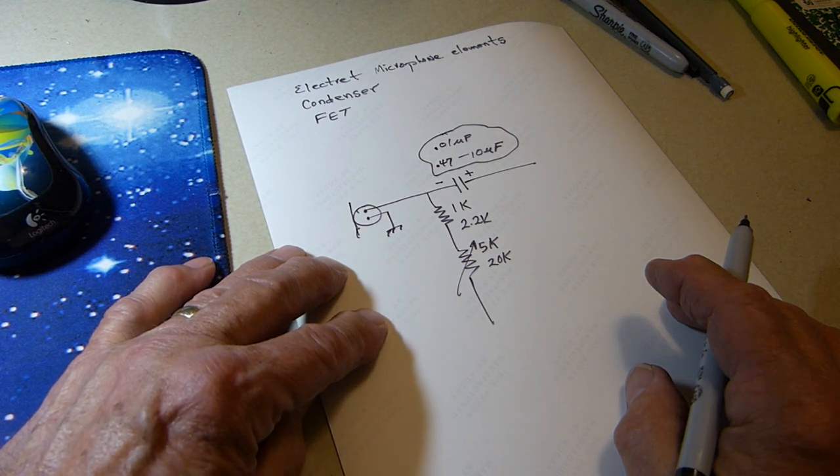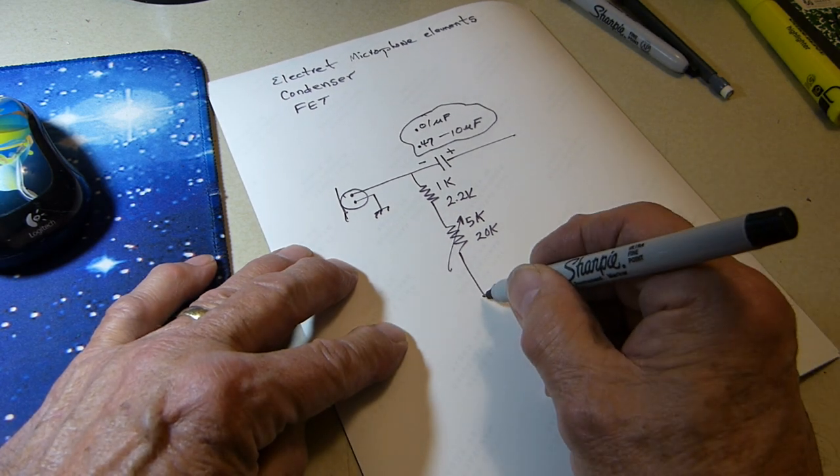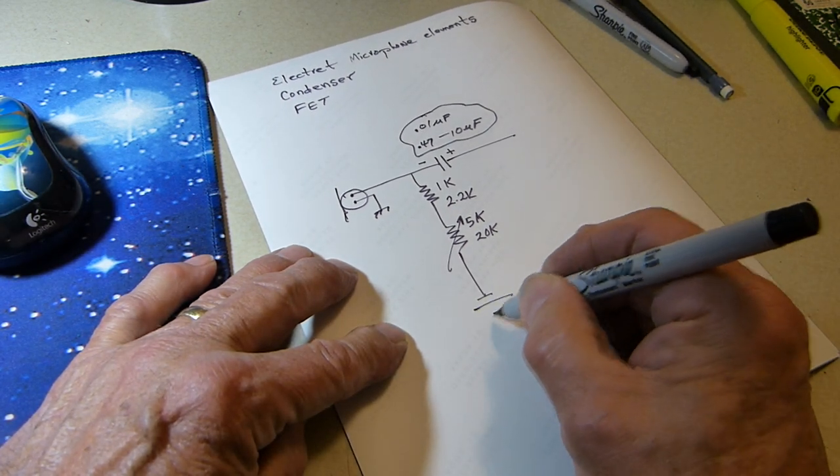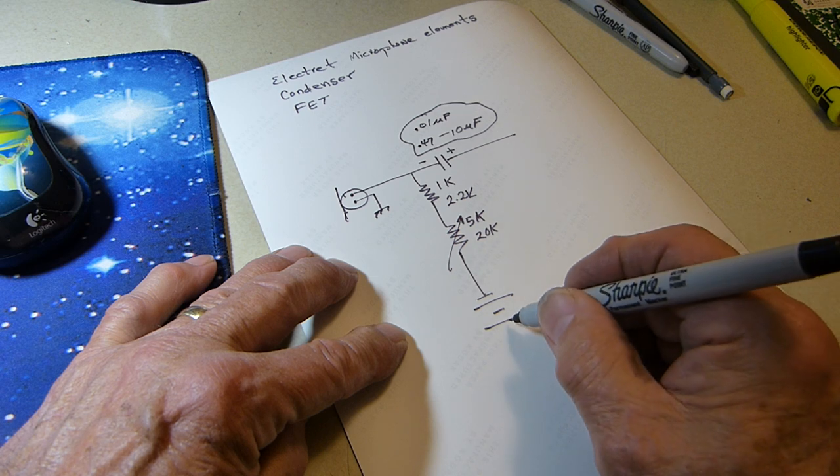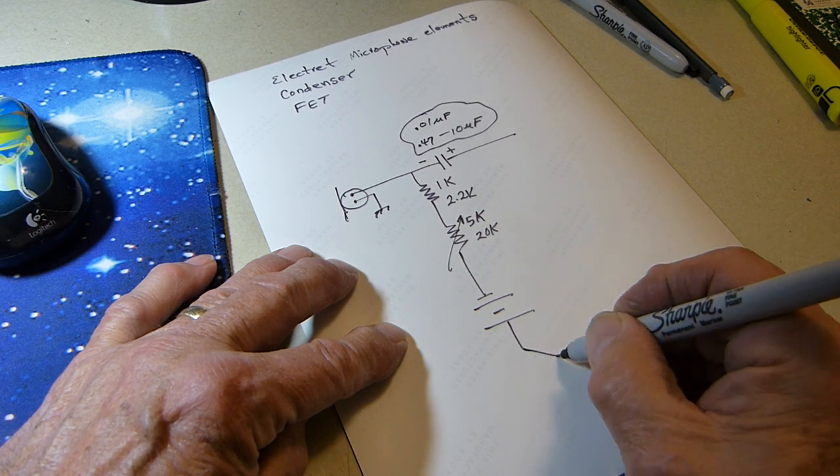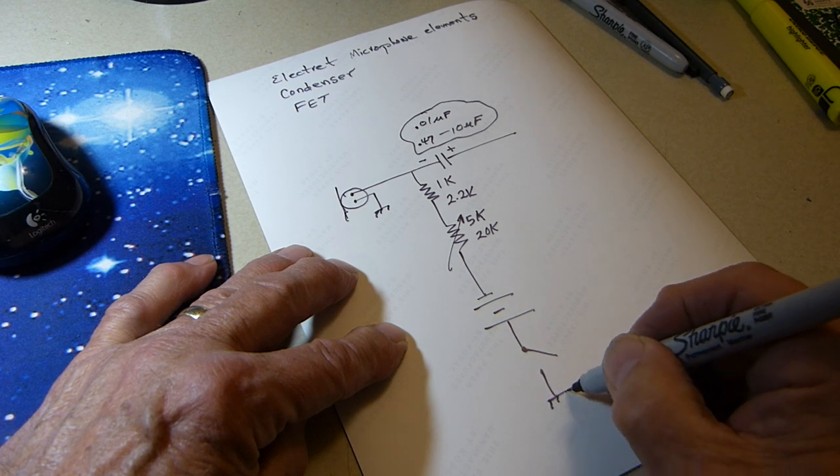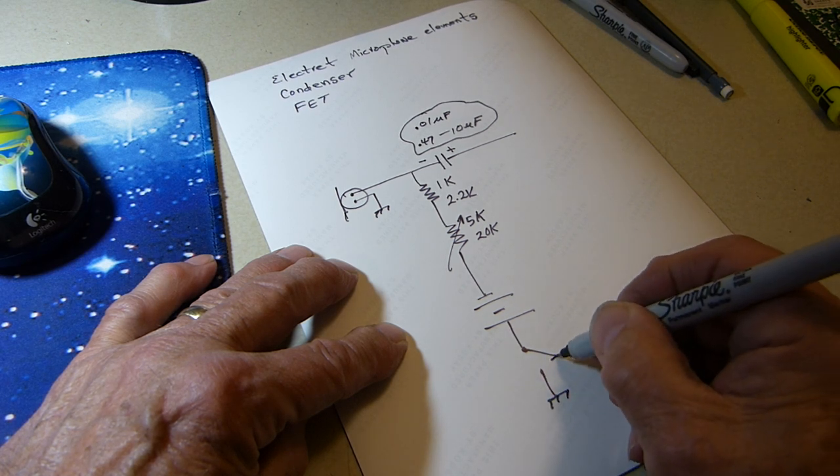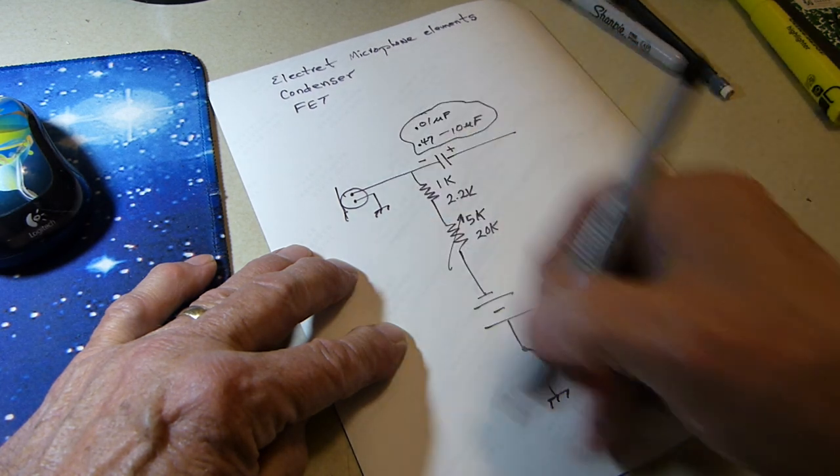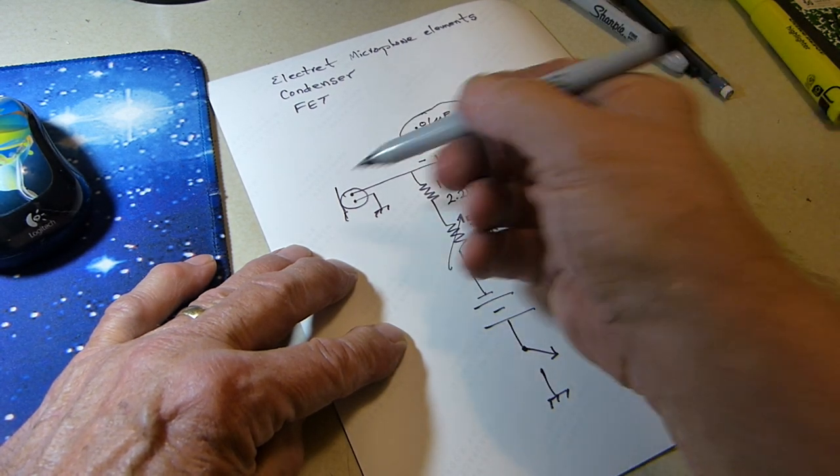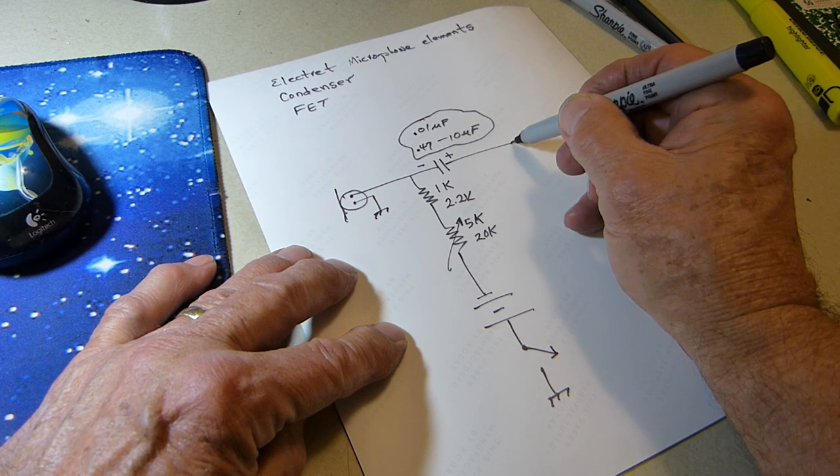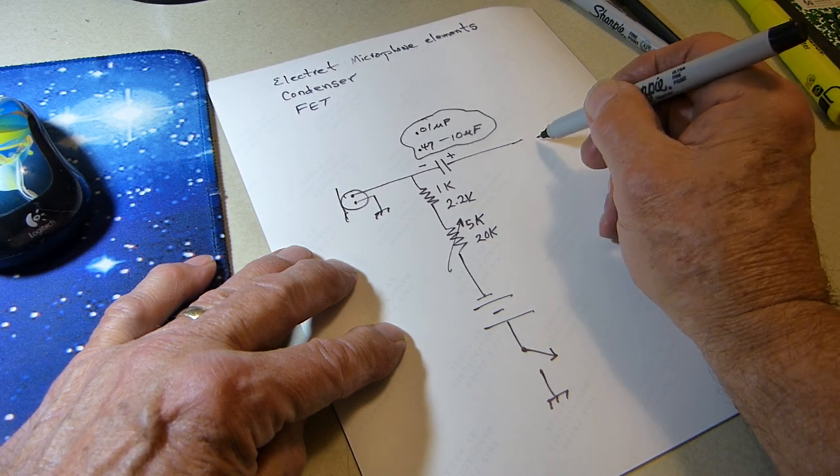Down here you've got a battery and your push-to-talk switch - if it's ham radio on a microphone. When you close the switch, this thing turns on, and when you speak into it, you get the audio out here. It's just that simple.